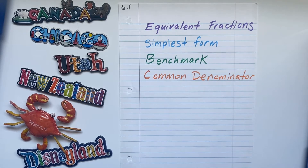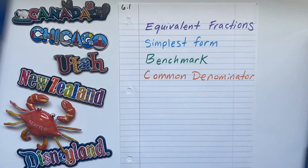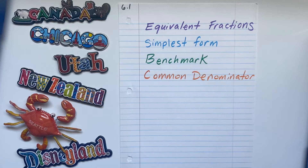This lesson is on fraction equivalents and comparing fractions. There are four main ideas in this lesson: equivalent fractions, simplest form, benchmark, and common denominator. We'll go through each one, give one example, and walk you through the steps of how to understand each of these ideas.